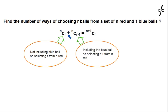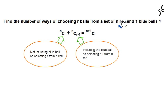Case 1: We do not include the blue ball. If we exclude the blue ball, then all r balls must be chosen from the n available red balls. This can be done in nCr ways.